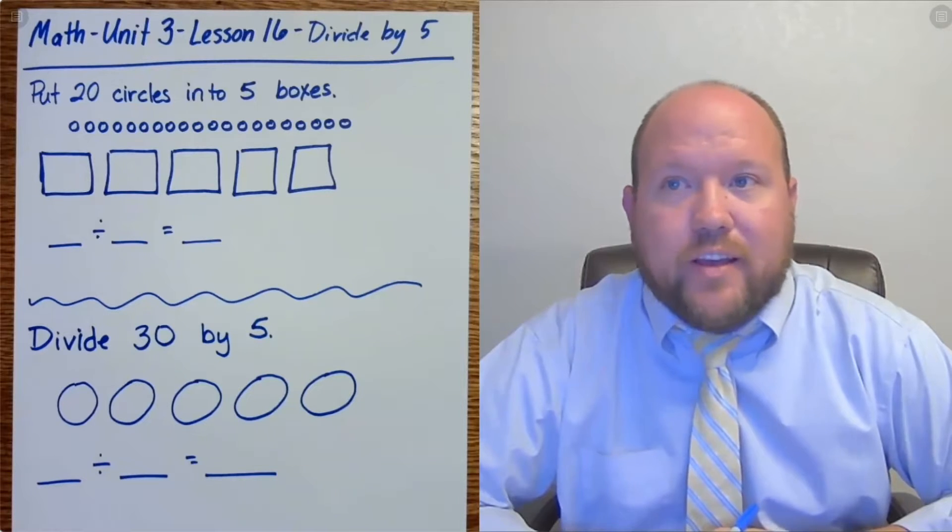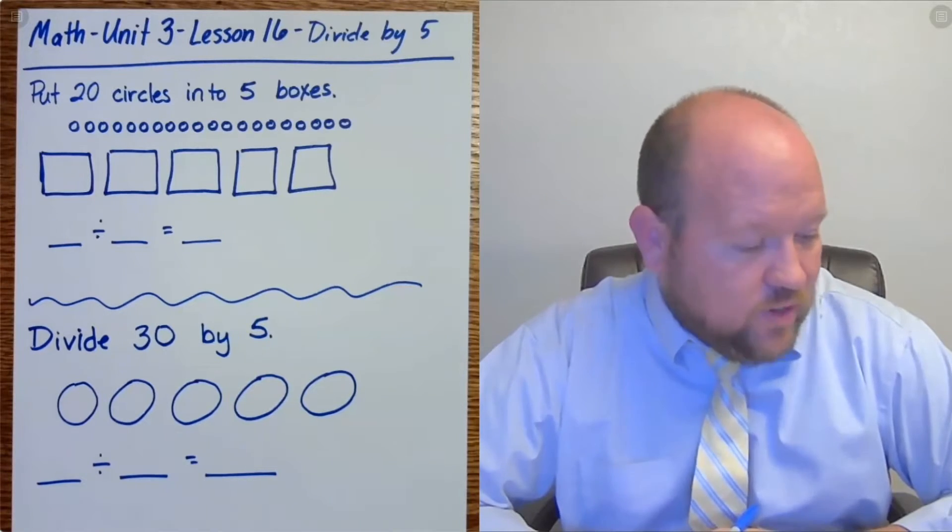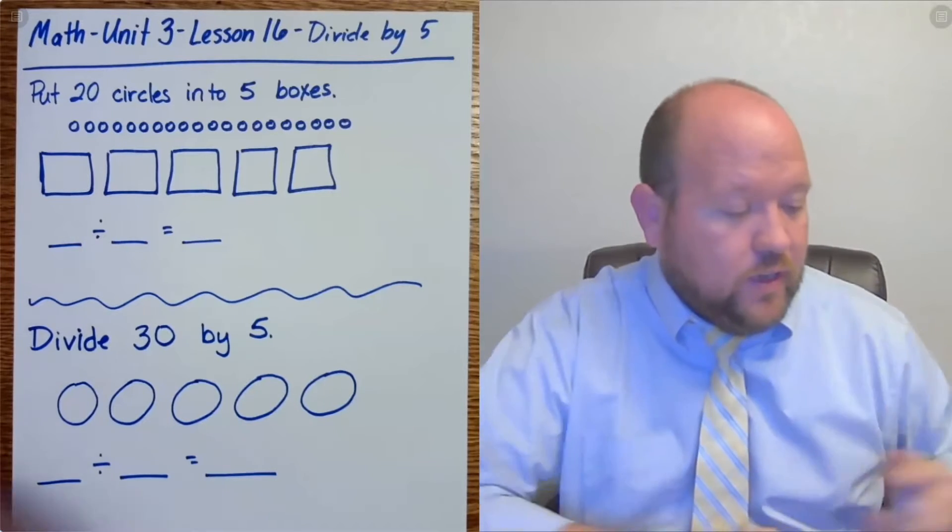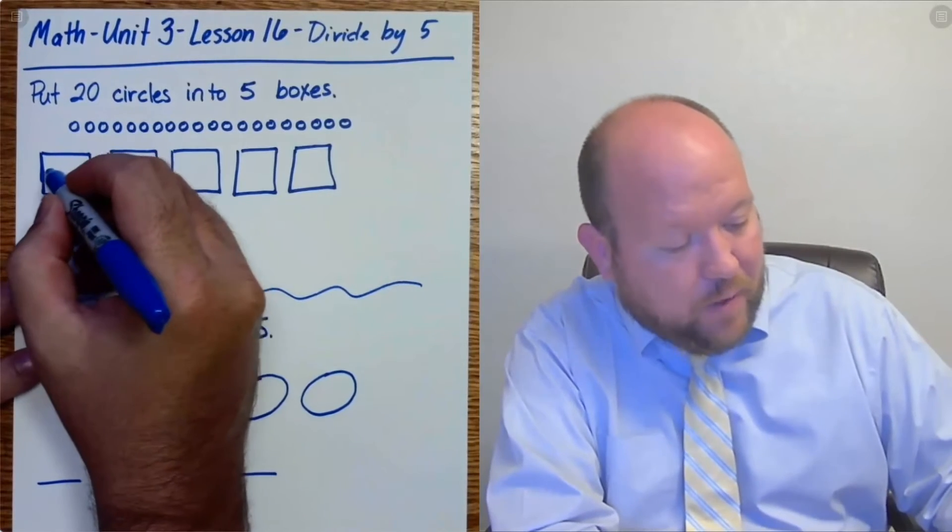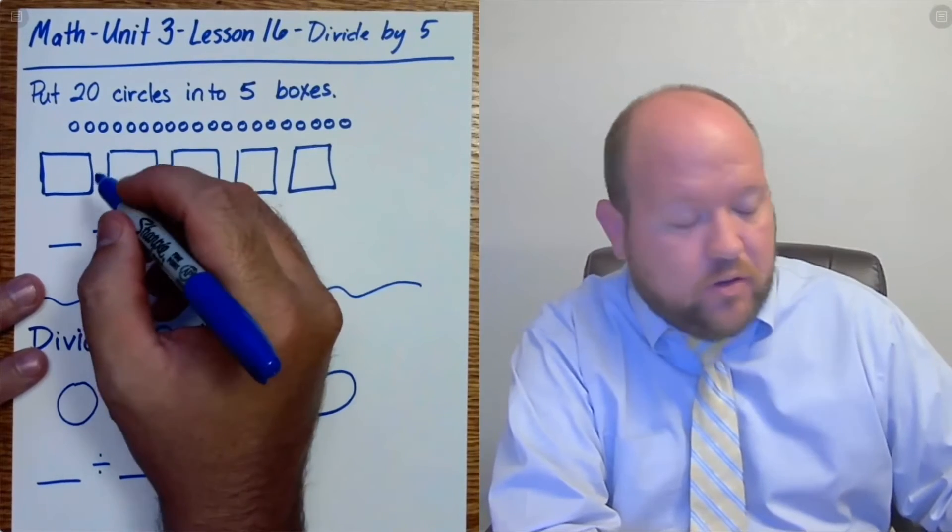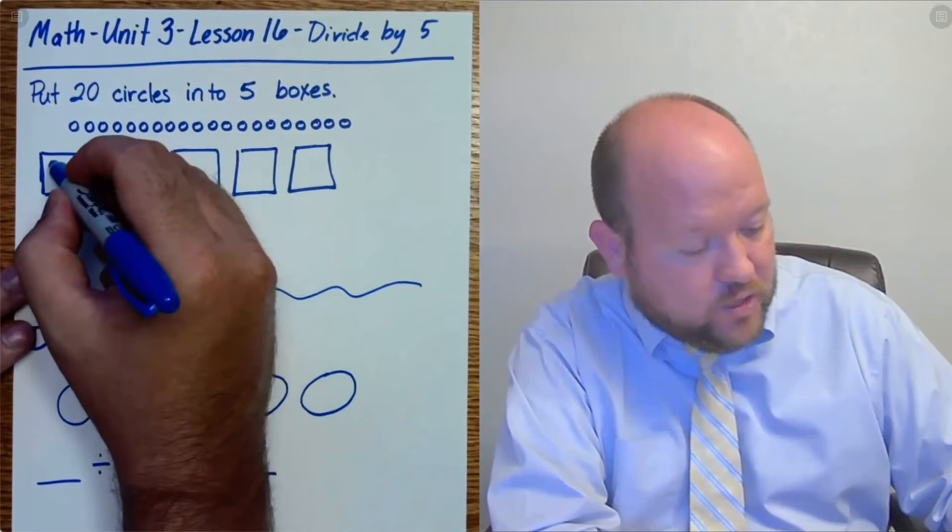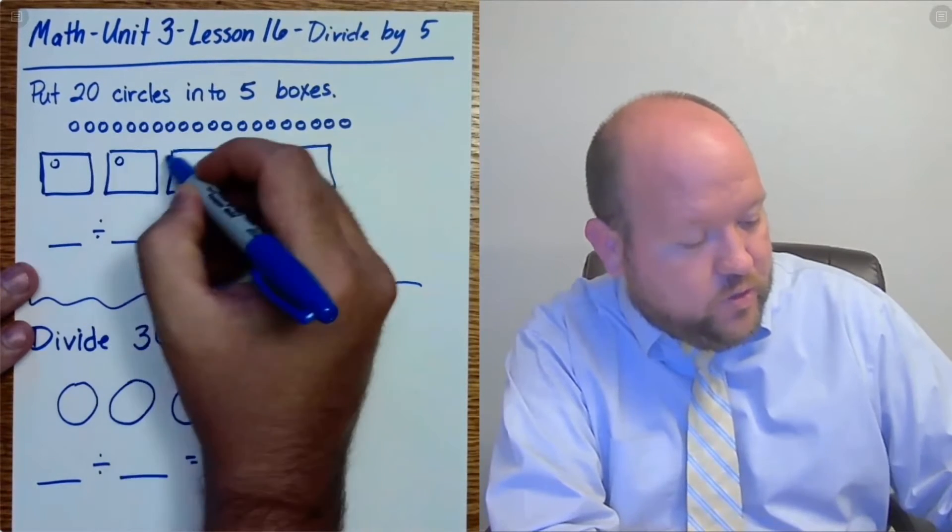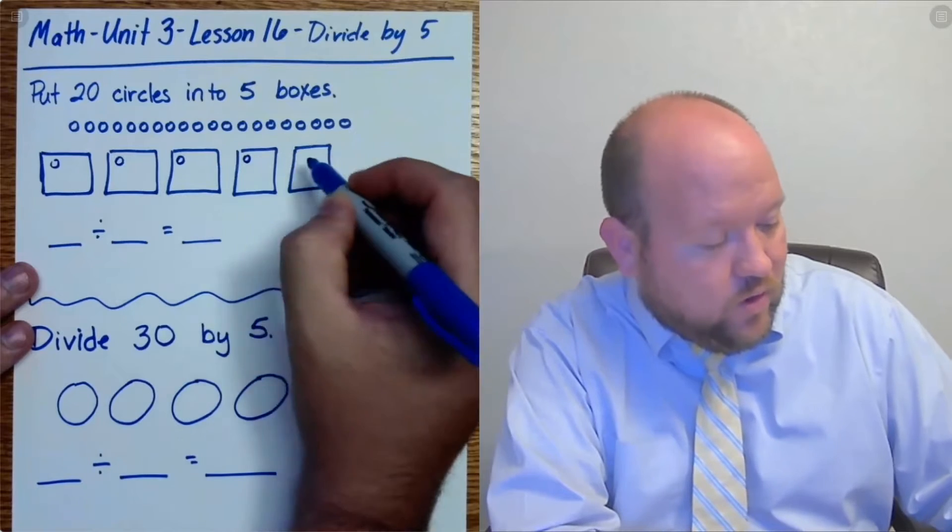So here we have two problems for us. First it says put 20 circles into 5 boxes. All right, so let's go ahead and do that. So I'm going to put 1 in each group and then go back and work them out. So 1, 2, 3, 4, 5.